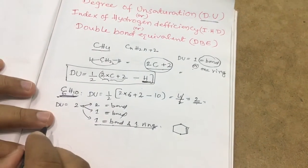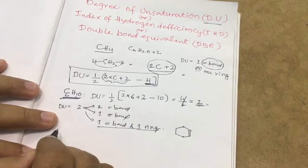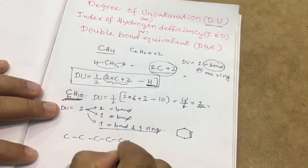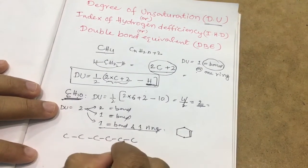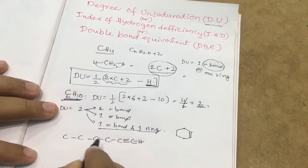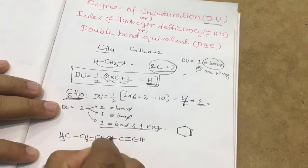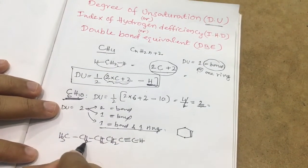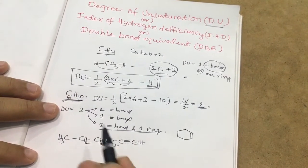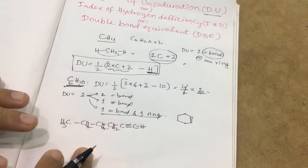Otherwise it may be 1 triple bond. With 6 carbons and 1 triple bond, the remaining carbons are satisfied with hydrogen: CH3, then four CH2 groups — giving 3+5+7+9+10 hydrogens, totaling 10. This is also satisfying. Next we could try 2 double bonds. Generally this is how we calculate degree of unsaturation.